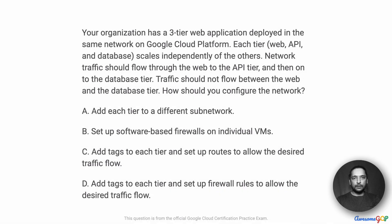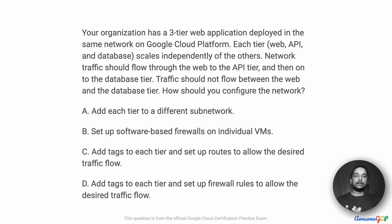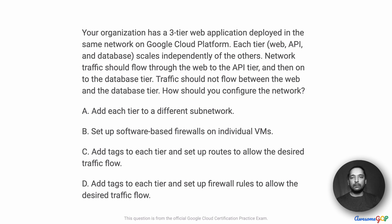In this project scenario, your organization has a three-tier web application deployed in the same network on Google Cloud Platform. Each tier — web, API and database — scales independently of the others. Network traffic should flow through the web to the API tier and then onto the database tier. Traffic should not flow between the web and the database tier. How should you configure the network?